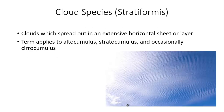Another form of cloud species is stratiformis — clouds spread out in an extensive horizontal sheet or layer. This term applies to altocumulus, stratocumulus, and occasionally cirrocumulus. You might get waves or ripples in the cloud formation. The picture example shows cirrocumulus stratiformis — notice how they are more layer-like, wavy, and ripply.